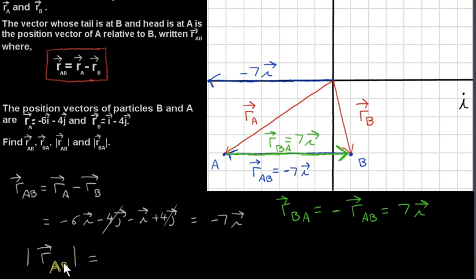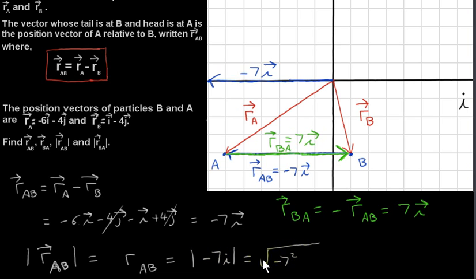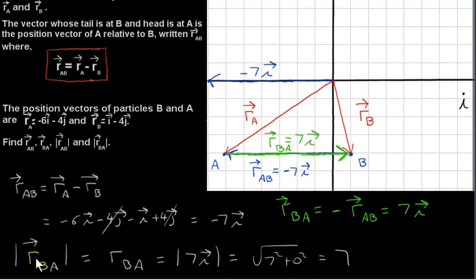Now let's look at the magnitude of RAB. We want the magnitude of minus 7I. Using Pythagoras' theorem, we get the square root of the sum of the squares of the components. The I component is minus 7, so we square minus 7; the J component of RAB is 0. So we have the square root of 49, which is 7. Similarly, the magnitude of RBA equals the magnitude of plus 7I, which is root of 7 squared plus 0 squared, also 7. The magnitudes of RAB and RBA are the same — it's just that their directions are opposite.